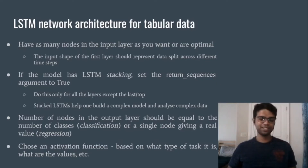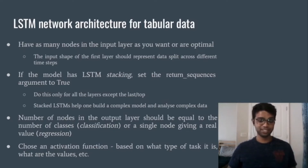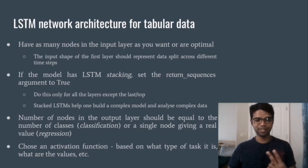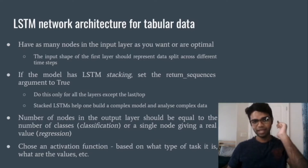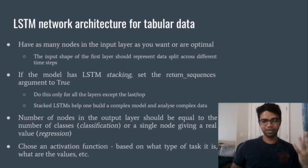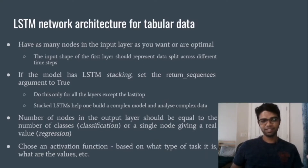Like it was for the MLP — which I recommend you watch as it was a simple but powerful approach — the number of nodes in the output layer should be equal to one for regression, or equal to the number of classes for multi-class classification. For binary classification, you can use one node with binary cross-entropy loss. The activation function should be based on whether you're doing classification or regression, or determined by hyperparameter search.